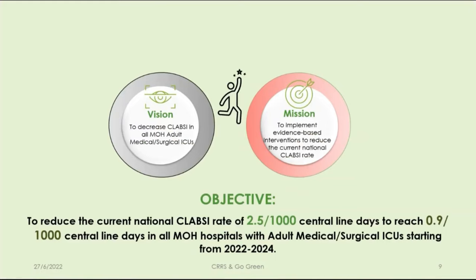GDIPC came with an ambitious strategy with a vision to decrease the CLABSI rate in all MOH adult medical-surgical ICUs to zero, by implementing evidence-based interventions to reduce the current national rate. The specific measurable objective is to reduce the national rate from 2.5 per 1,000 central line days down to 0.9 — and that 0.9 is what Go Green refers to. We aim to reach 0.9 per 1,000 central line days in all MOH hospitals with adult medical-surgical ICUs from 2020 to 2024. The strategy will be conducted over three years.